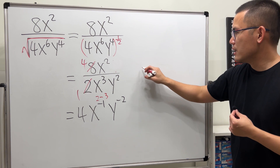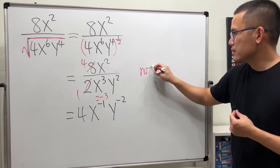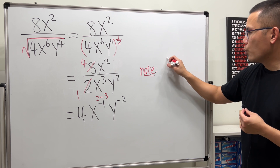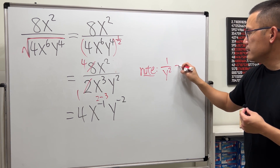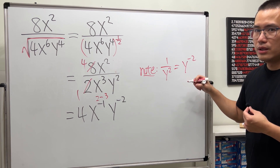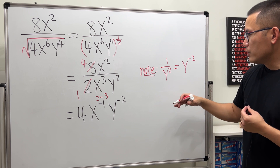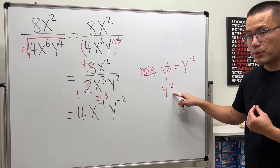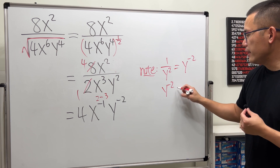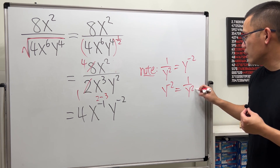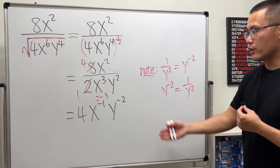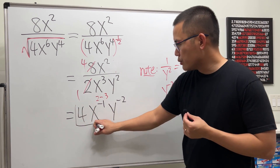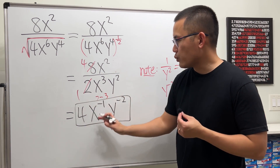Here's a quick note: 1 over y squared is the same as y to the negative 2. Usually, when you see a negative exponent you bring the term back down and flip it. So that's how they get that, and this is how they want you to present the answer, so I'll leave it like this as well.